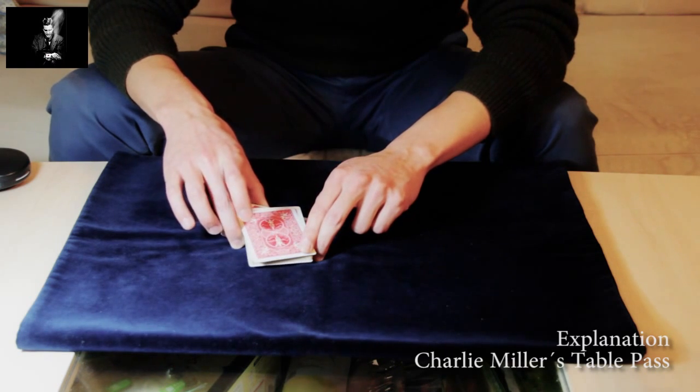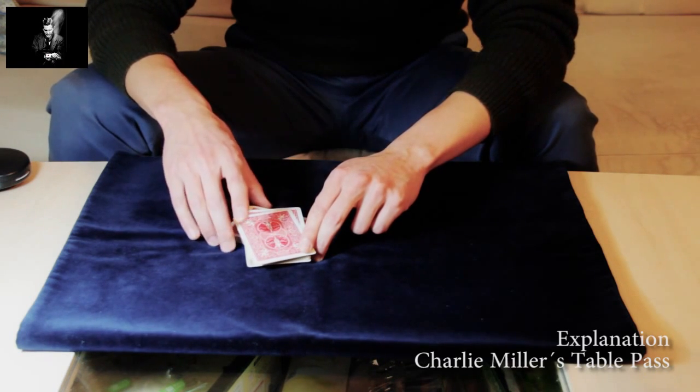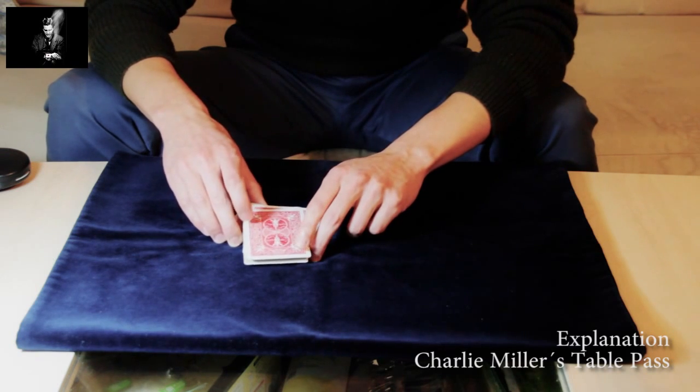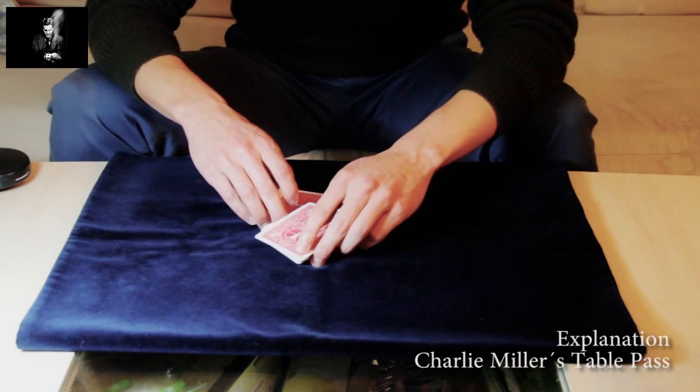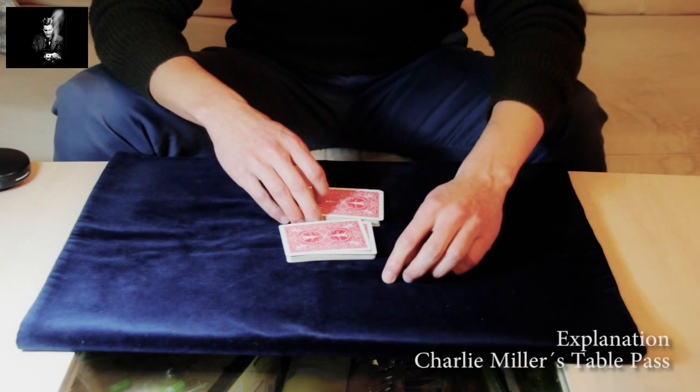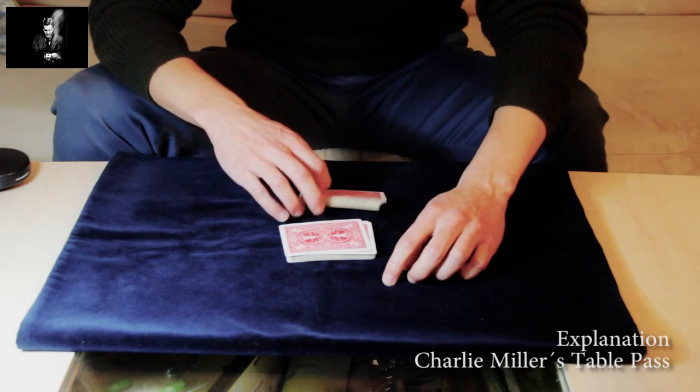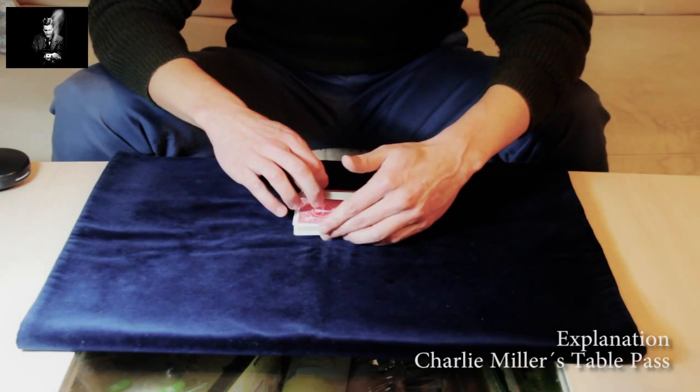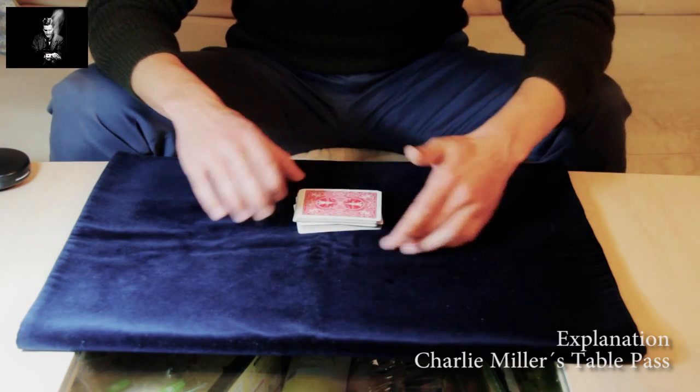Then you rotate. With your right hand you just grab the bottom packet, which is actually the original top packet. You finish this movement until you have reached this position. Then you pivot this up so that the original bottom packet can go back to the bottom.